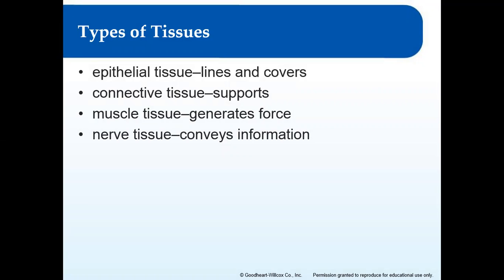Epithelial is easy to remember because it kind of sounds like epidermis — something skin-related — it lines and covers. Connective tissue supports and connects; it holds things together. It has a broad range of types, from blood — which is a type of connective tissue — all the way to bone, which is another type. So it's a very wide range of function and structure.